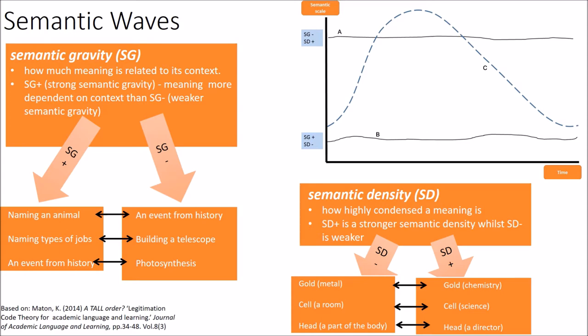He distinguishes semantic gravity, which is how much a word's meaning is related to its context. For instance, naming an animal has a large gravity and thus is SG+, in relation to talking about an event from history which is further removed from our immediate experience, making it SG-.